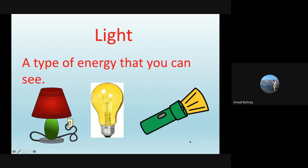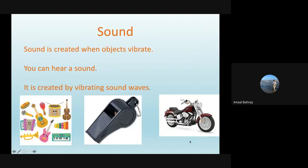Let's talk about light. Light is a type of energy that you can see. We have a flashlight, we have a light bulb, we also have a lamp. These are things that allow us to see.